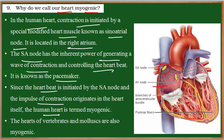Since it originates in the human heart, it is called myogenic. Myogenic means the impulse which controls the heartbeat is generated by the sinoatrial node, which is nothing but a specialized cardiac muscle located in the right atrium. Since the cardiac muscles alone generate the impulse to control the heartbeat, the human heart is called myogenic. This kind of myogenic heart is seen in vertebrates and mollusks.